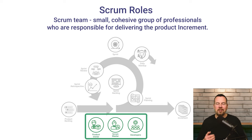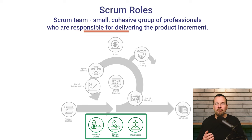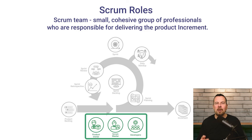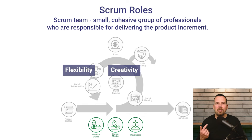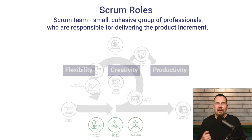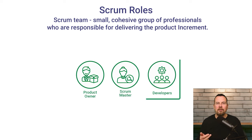Scrum roles exist in the Scrum team, which is the fundamental unit of the Scrum framework. It is a small and cohesive group of professionals responsible for delivering the product increment and other Scrum artifacts. The Scrum team is structured to maximize flexibility, creativity, and productivity. There are three roles in the Scrum team: product owner, Scrum master, and developers.